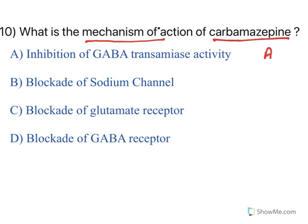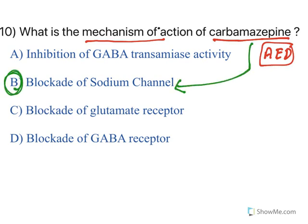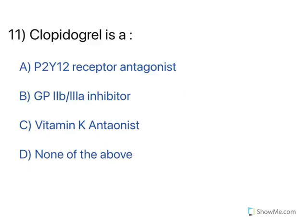What is the mechanism of action of carbamazepine? Carbamazepine is an anti-epileptic drug. Carbamazepine acts by inhibiting sodium channels — its mechanism of action is blockade of sodium channels at neuronal levels.